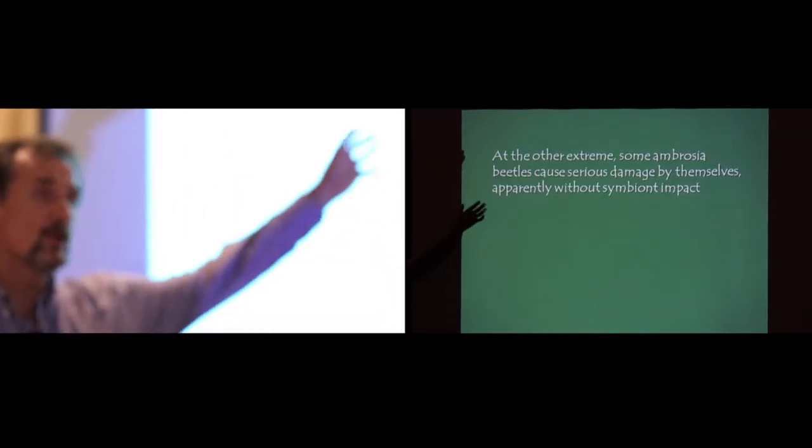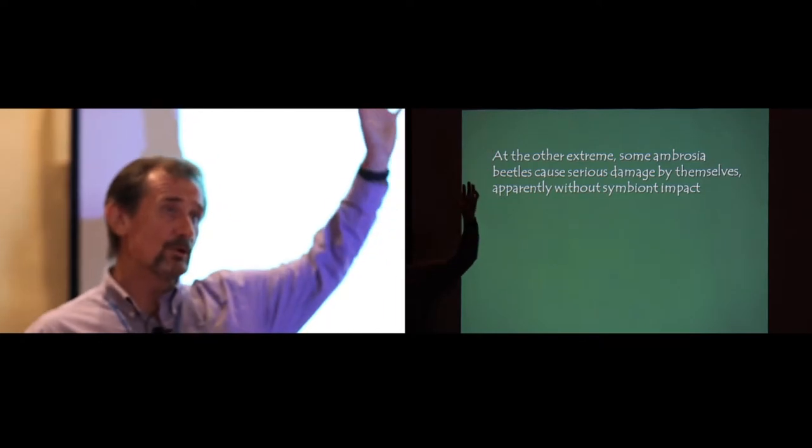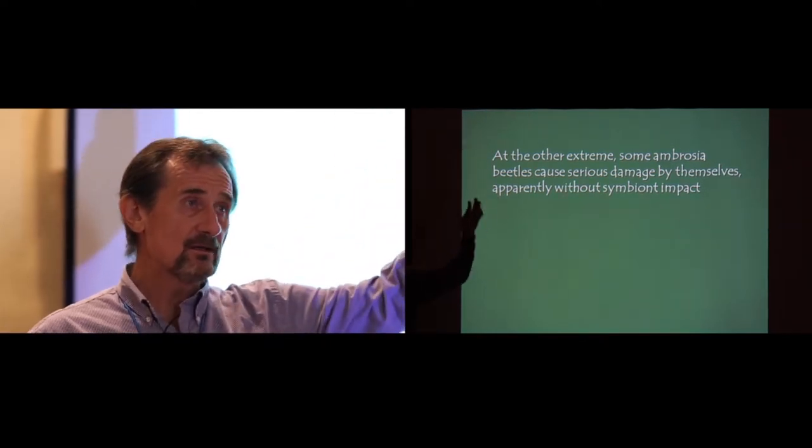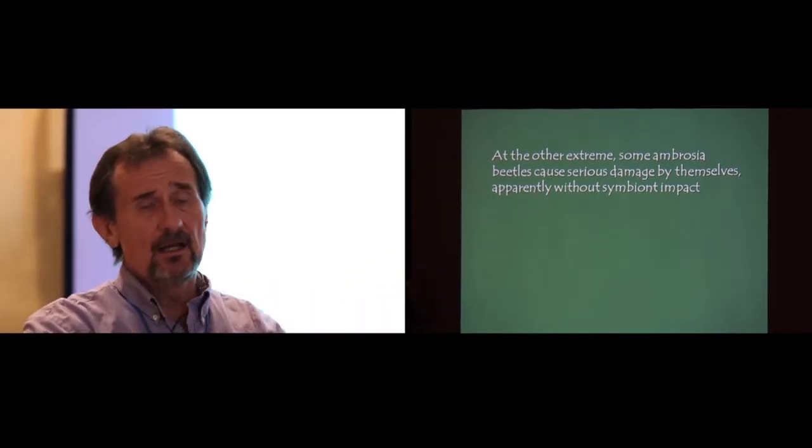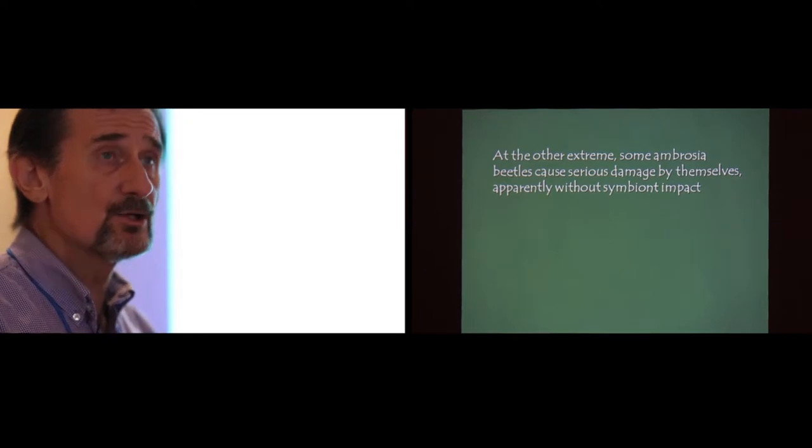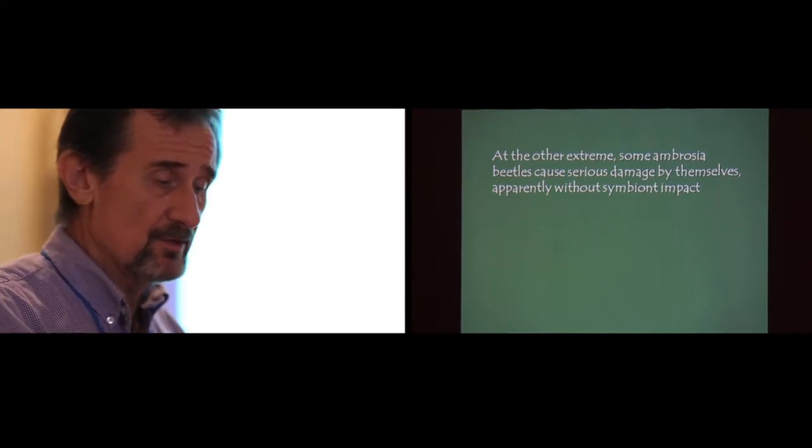At the other end, if we look at the spectrum, where we've got laurel wilt, systemic infection, kills trees rapidly, at the other end are ambrosia beetles that apparently interact with trees and damage trees without any impact of the symbiont.